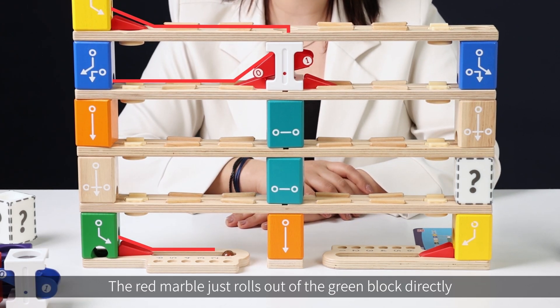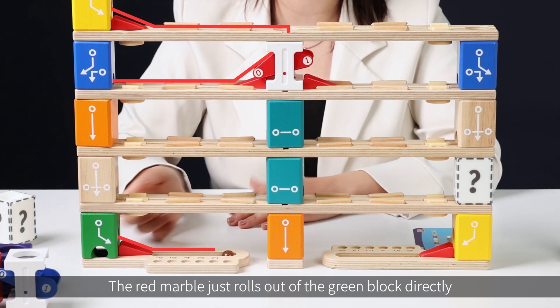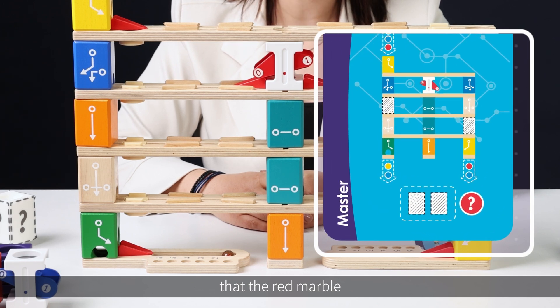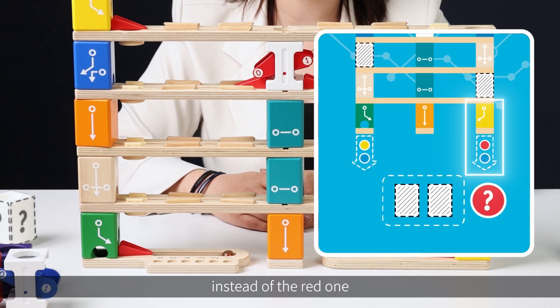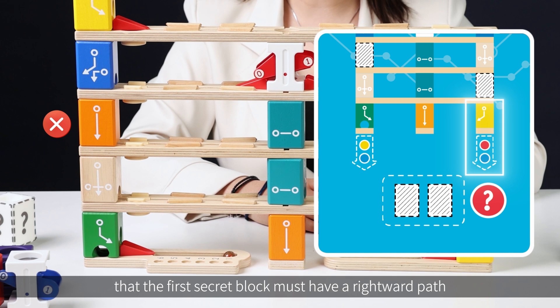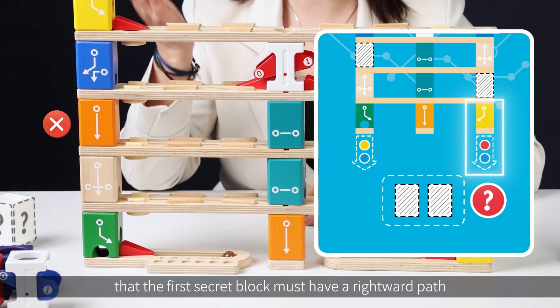The red marble just rolls out of the green block directly, but we can see from the challenge card that the red marble should roll out of the yellow block instead of the red one. So, the downward path is not an option in this case. Which means that the first secret block must have a rightward path.